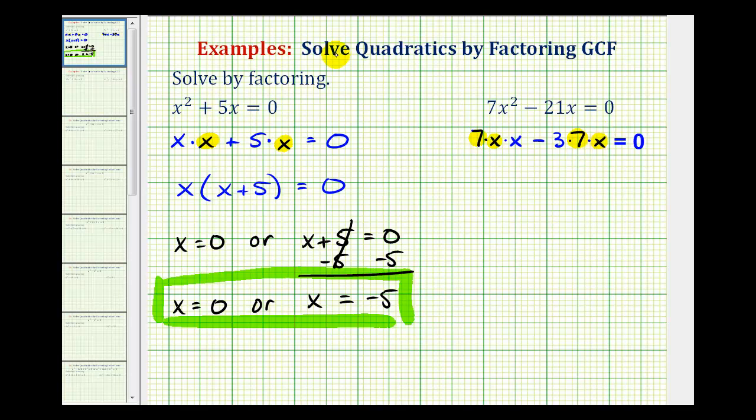So the greatest common factor is 7x, which we'll factor out. So if we factor out 7x, we're left with x minus 3, and this product is equal to zero.